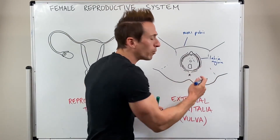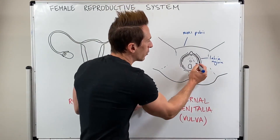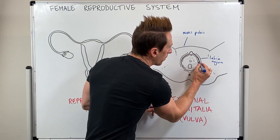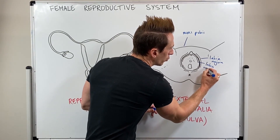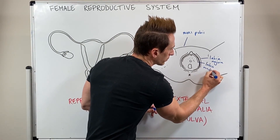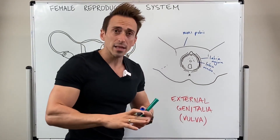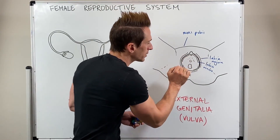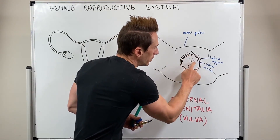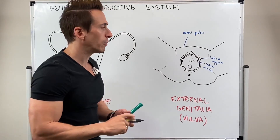Then there are more internal skin folds that we call the labia minora. These skin folds move from the clitoris down to the vaginal orifice itself.